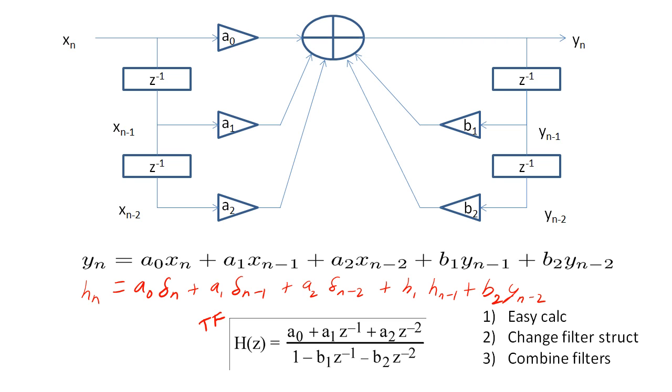And fourth, it allows us to determine if the system is stable. So the first reason, if we have h of z, we can find h of n by taking the inverse Z-transform of h of z.